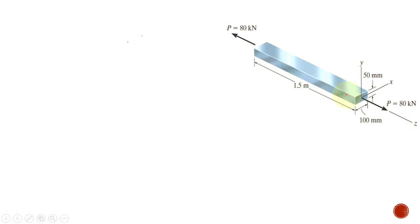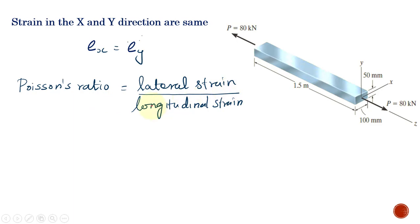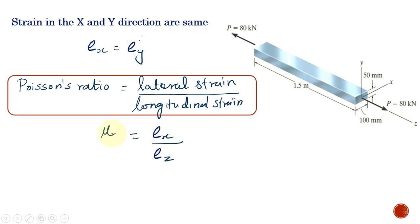Now we calculate the change in dimension along the cross section — that is, along the X and Y axes. The strains along X and Y are the lateral strains, while the strain along Z is the longitudinal strain. We have already calculated the longitudinal strain. We now calculate the two lateral strains. These two lateral strains are equal in magnitude: ε_x equals ε_y. We use Poisson's ratio to determine the lateral strain. Poisson's ratio equals lateral strain divided by longitudinal strain, where the longitudinal strain is ε_z, already calculated.